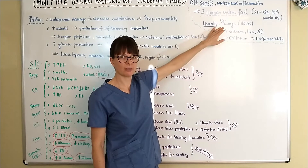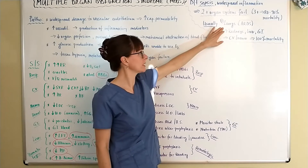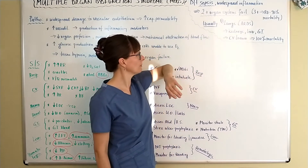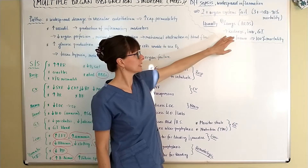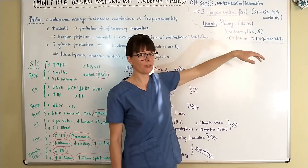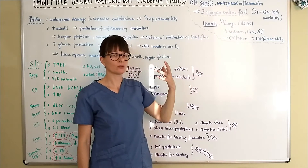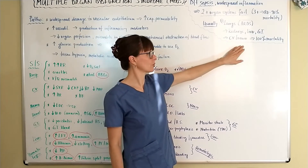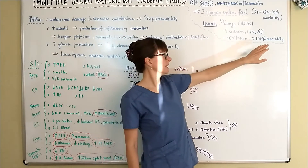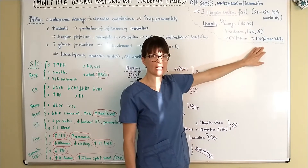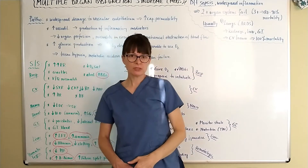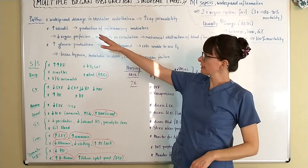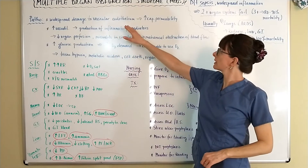Usually the lungs fail first because of the cytokine release and this massive inflammation, leading to ARDS, or Acute Respiratory Distress Syndrome. What follows is the kidneys, liver, and GI system failing. And if it spreads so far that the cardiovascular as well as the neurologic system are affected, it leads to 100 percent mortality. Pathophysiologically, there is widespread damage to the vascular endothelium.